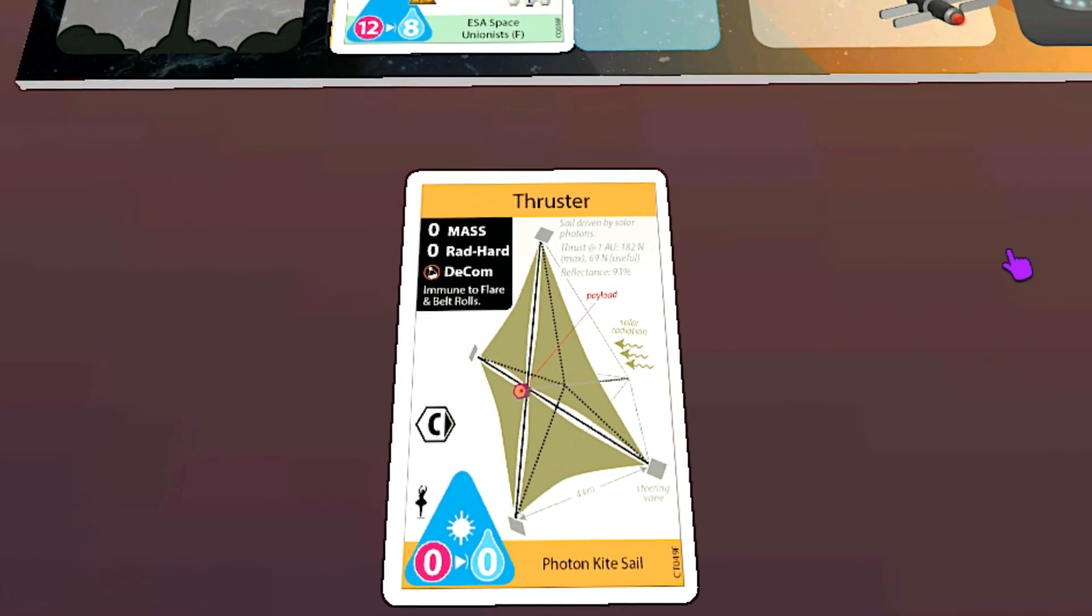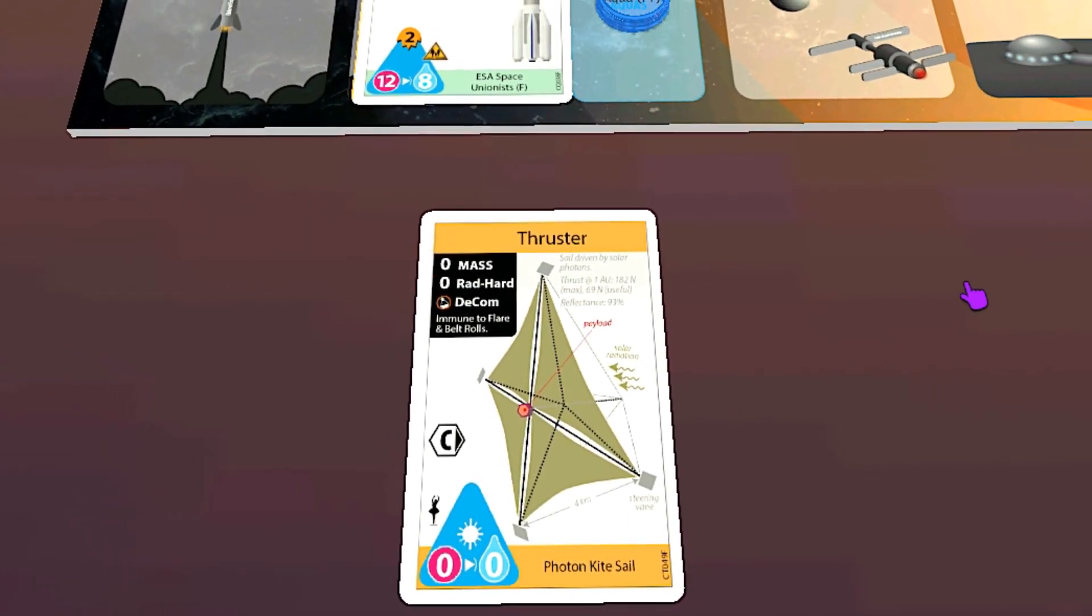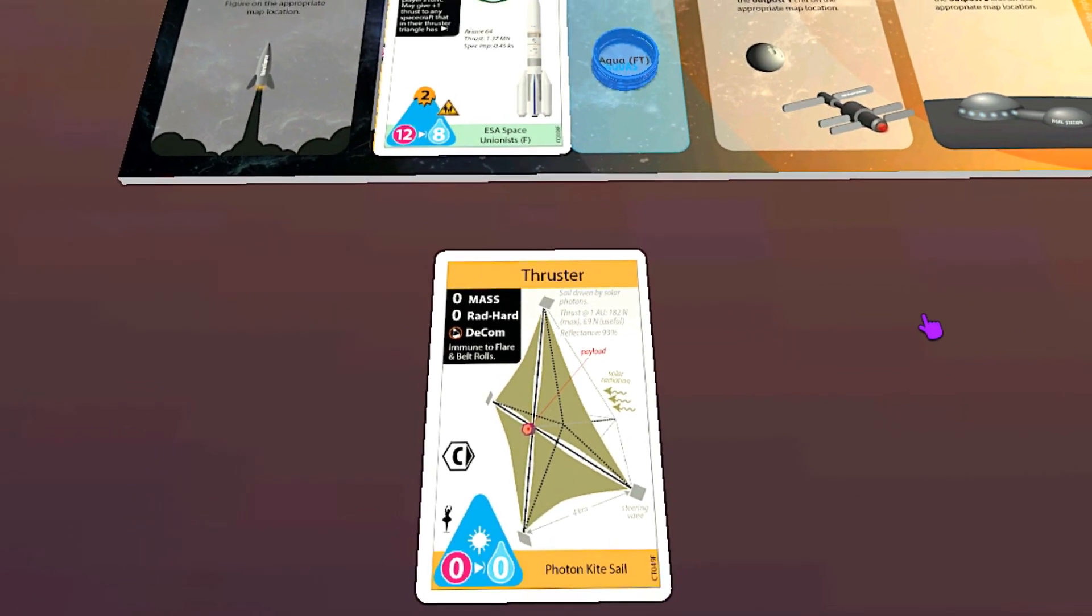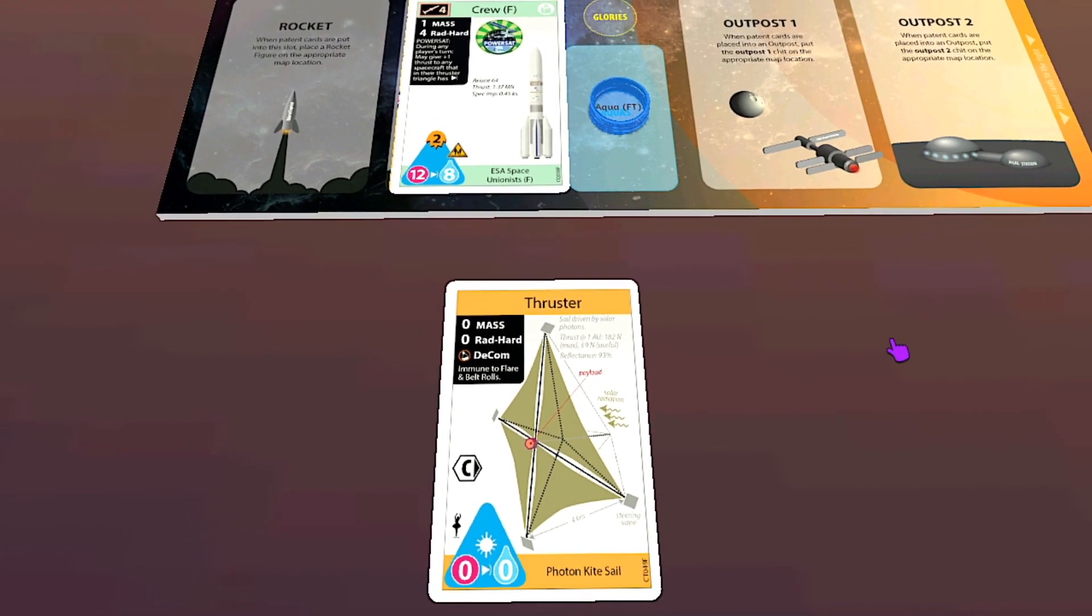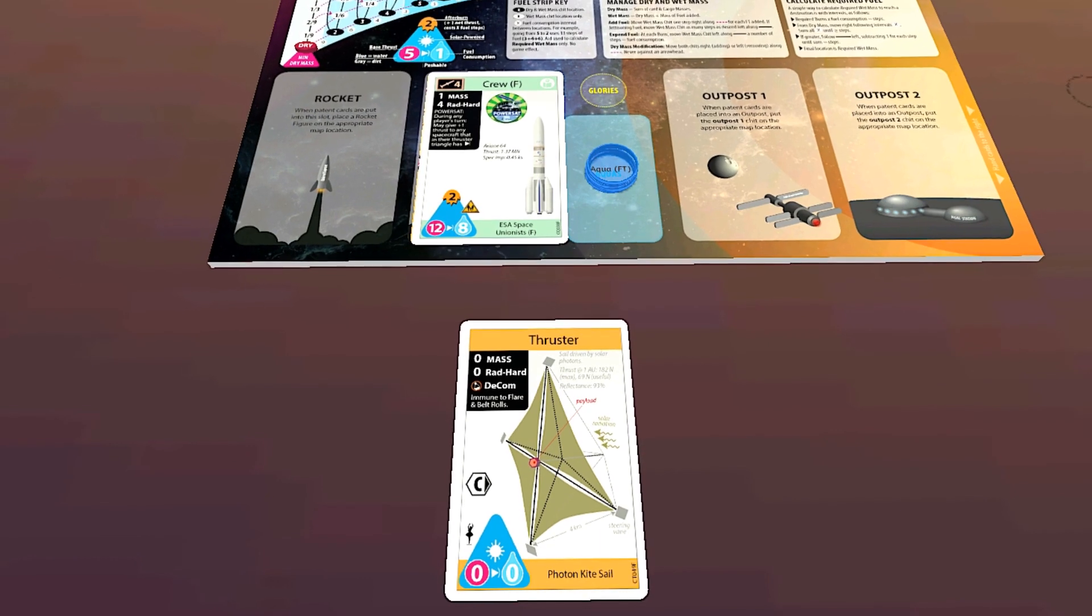This says that with the research auction operation, take the top card of a patent deck for the operation without bonus supports. This costs the number of aquas equal to one plus the number of seniority discs removed so far from the solar cycle. Since we are at the beginning of the game, it just costs one aqua.